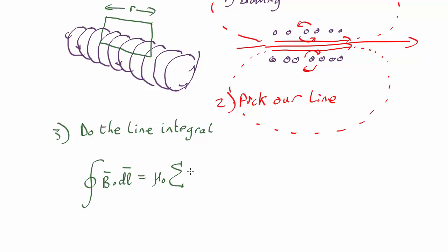So how much current is inside here? Well, it's going to be equal to each individual wire contributing i. How many wires are there? Well, if we know there are n wires in the total solenoid and the total solenoid is length l, so that's l here, then multiply by r. That will tell us how many wires are actually going through this particular rectangle.